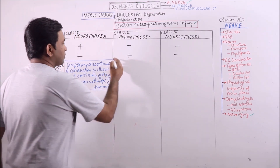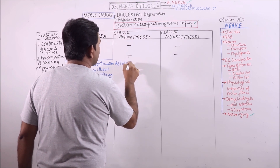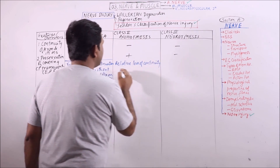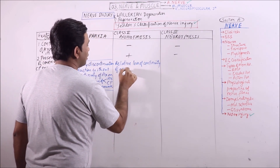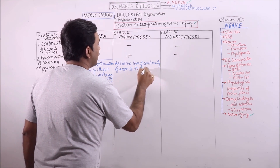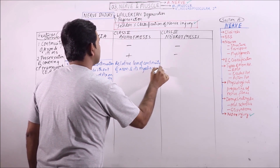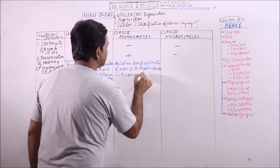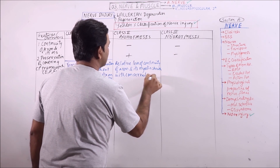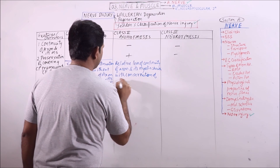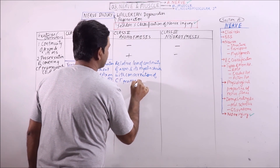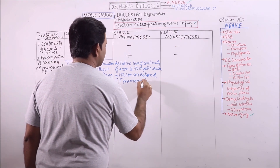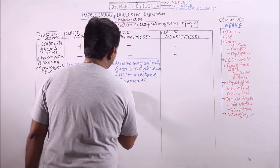What is axonotmesis? It is relative loss of continuity of the axon and its myelin sheath, with conservation of the connective tissue framework.